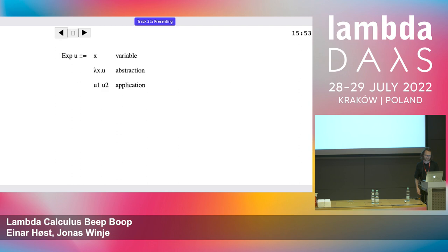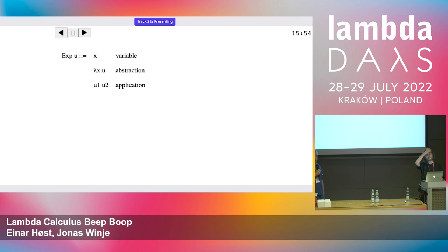This is the syntax for the lambda calculus — the regular syntax we all know and love, as you're supposed to say. A lambda calculus expression is basically either a variable, a lambda abstraction, or an application. Variables, functions, and function application — not much else — but of course you can encode other things like numbers if you want to do programming stuff.